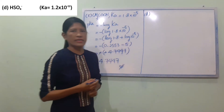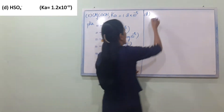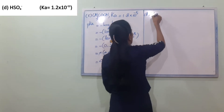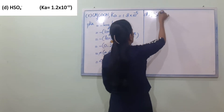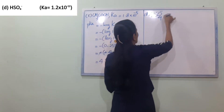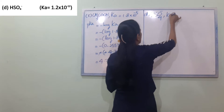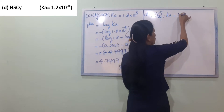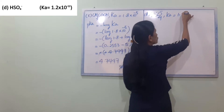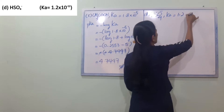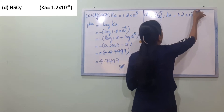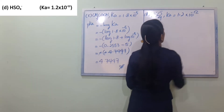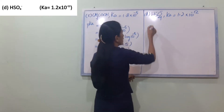For the hydrogen sulfate ion, HSO4 minus, Ka is equal to 1.2 into 10 power minus 12.